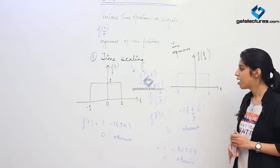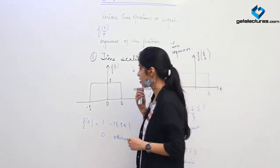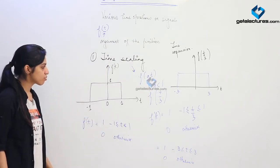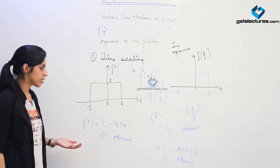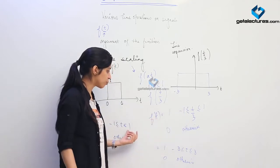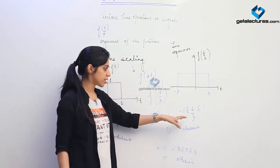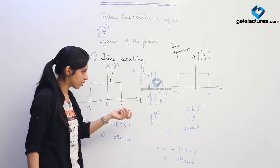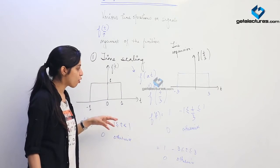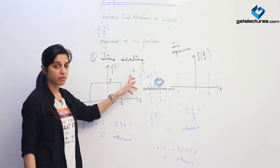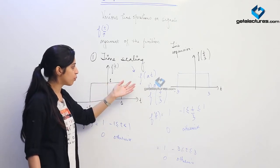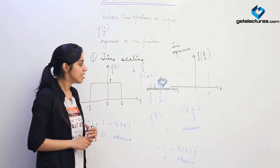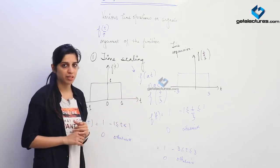If multiplying the argument with a constant greater than 1, we obtain time compression; if we multiply with a constant less than 1, we obtain time expansion. This is all about time scaling — just replace the argument with the required argument and perform operations so the limits change but the argument remains t. If instead we had multiplied or divided the function itself — like 3f(t) — then the output value would change but the time axis would remain unchanged.